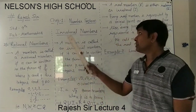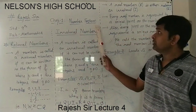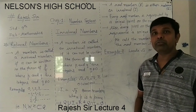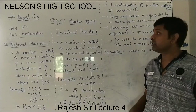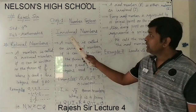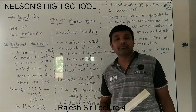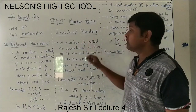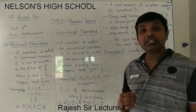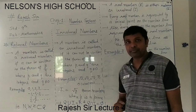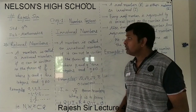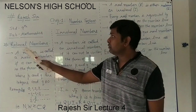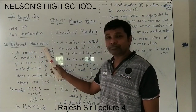In number system, after exercise 1.1, we have the next topic as irrational numbers. To understand irrational numbers, first we have to understand what is a rational number. So here we recall: what is a rational number?